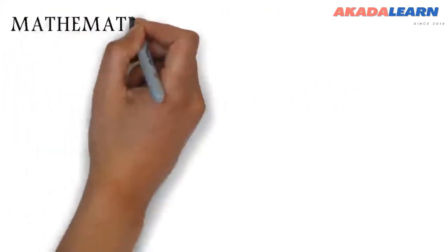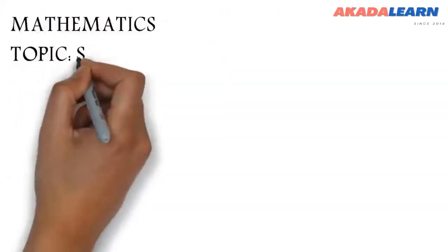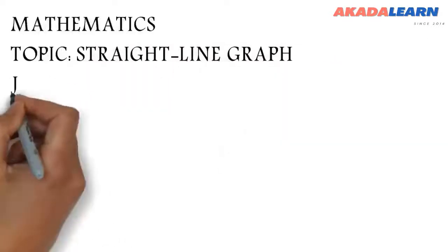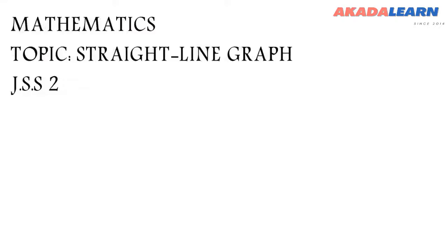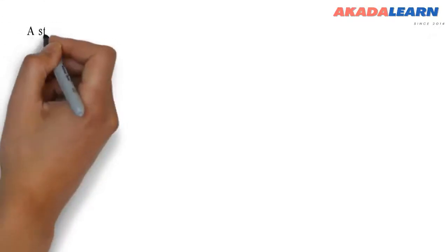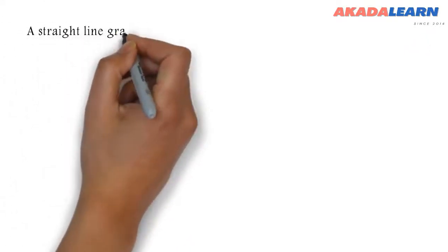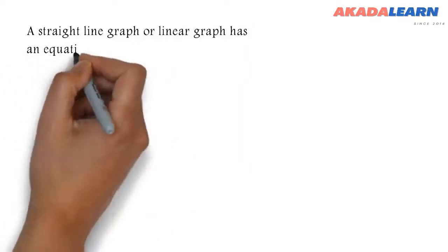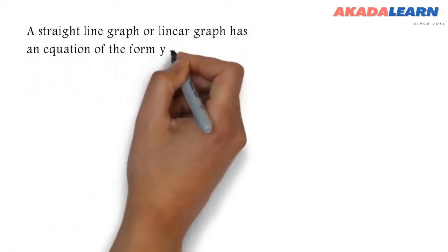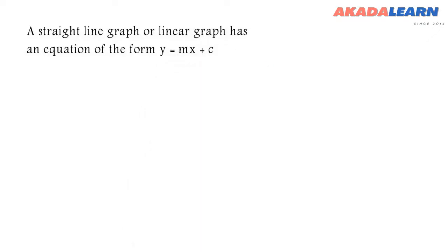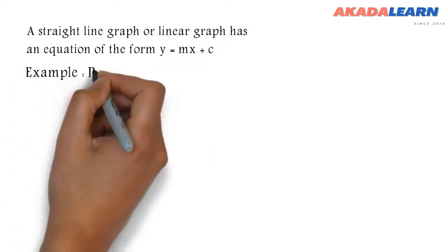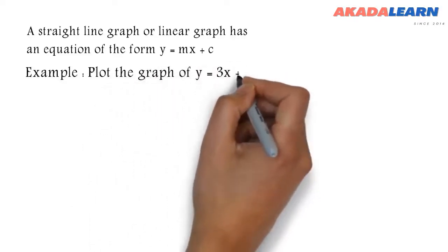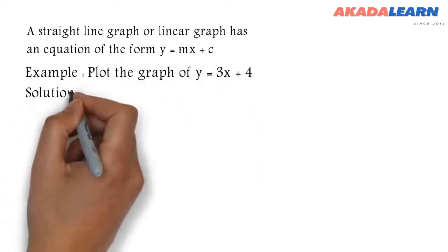Welcome to class. Today we are going to see how to plot a straight-line graph from a linear equation. A straight line graph or linear graph has an equation of the form y = mx + c. Let's see an example. We are asked to plot the graph of y = 3x + 4.